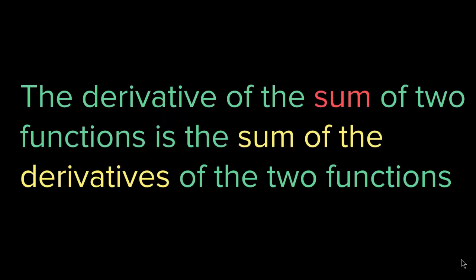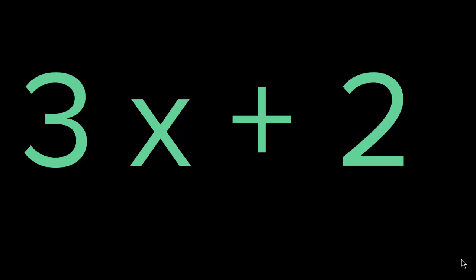The rule for that is: the derivative of the sum of two functions is the sum of the derivatives of the two functions. If we have two functions and we sum them, the derivative is the derivative of the first one plus the derivative of the second one. If we have subtraction, it is the derivative of the first one minus the derivative of the second one.